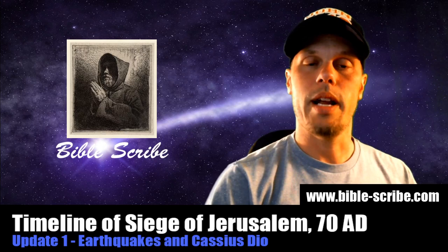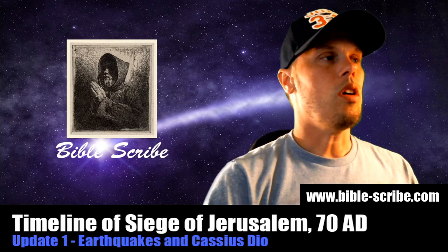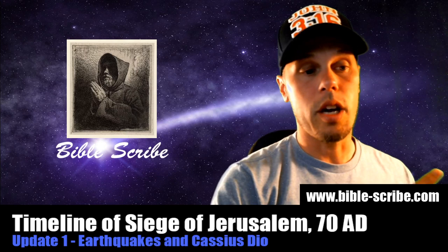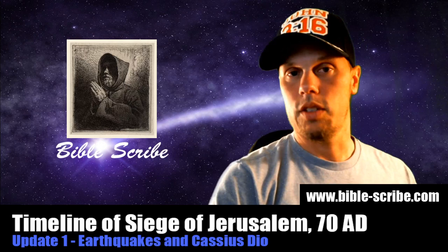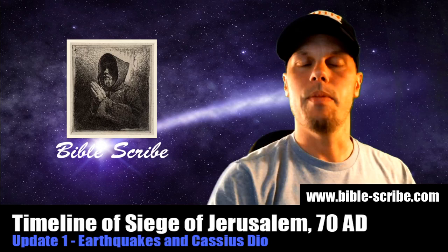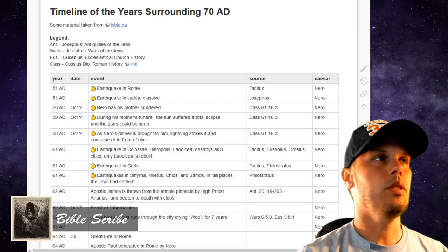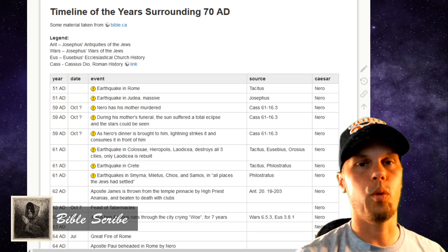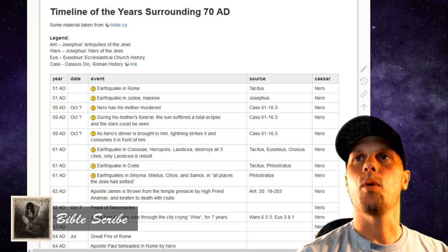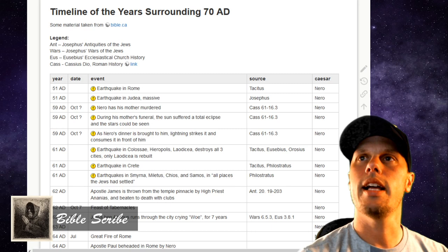So I have done this as an update video to my previous one on the timeline surrounding the year AD 70 and the Siege of Jerusalem. I'm going to go through my new timeline with you. We won't go through the other things we already looked at in the previous video — I may skim through those very quickly. Here is the timeline. I had it in a Word document, but now I've moved to my wiki so I can build it out in a table format a little better. You can see I have added in my legend Cassius Dio's Roman history, and I have a link to that.